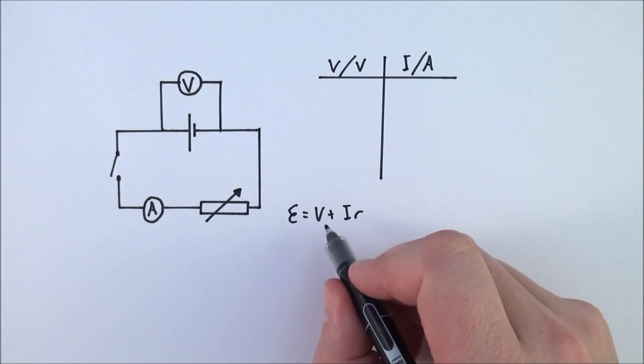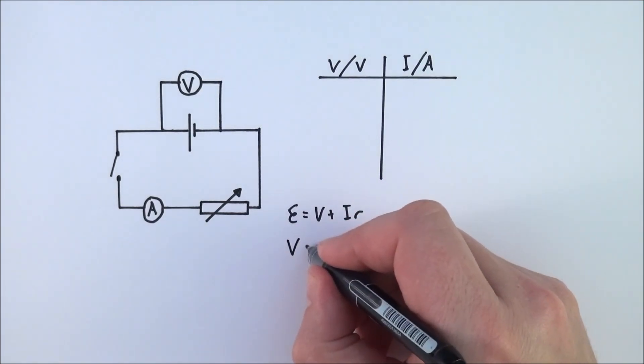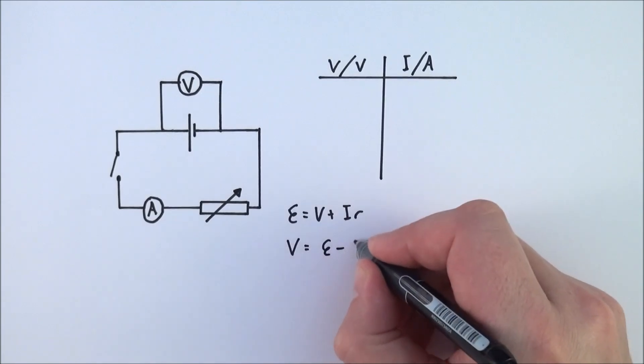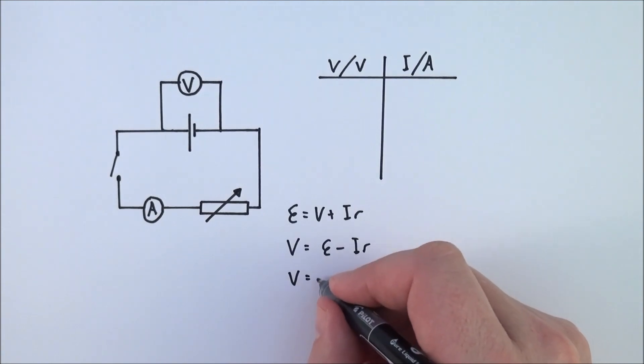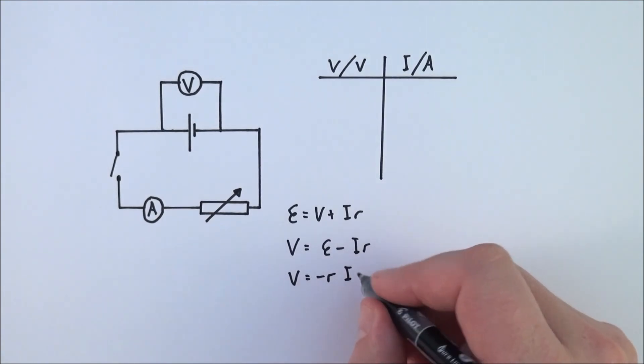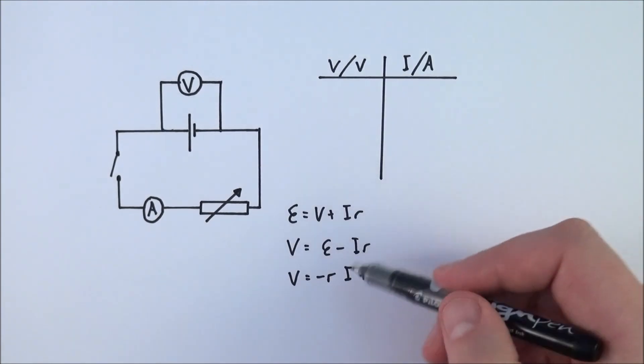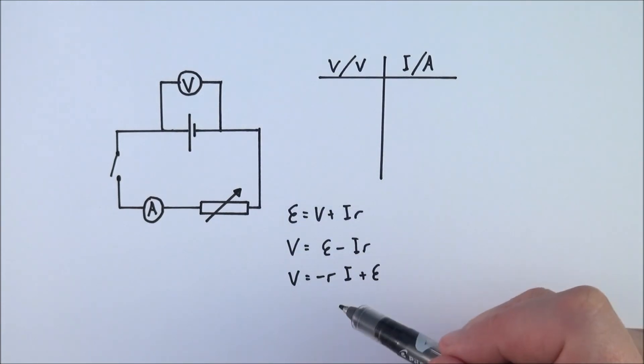If I rearrange this equation, I can also say that V is equal to E minus Ir, and I can then also say that V is equal to minus rI plus E. So it's just the same equation, just rearranged in this form.